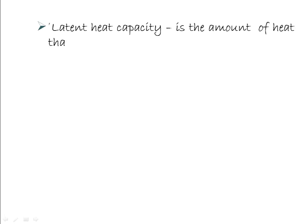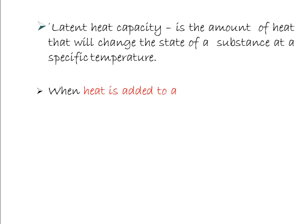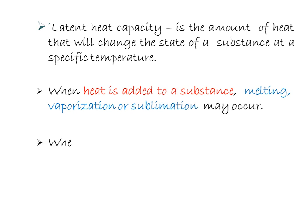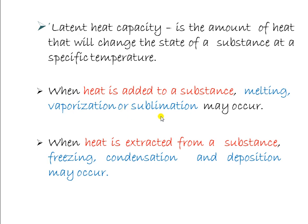Latent heat capacity is the amount of heat that will change the state of a substance at a specific temperature. When heat is added to a substance, melting, vaporization, or sublimation occurs. When heat is extracted from the system, freezing, condensation, and deposition may occur. Melting: solid converts to liquid. Vaporization: liquid converts to vapor. Sublimation: solid converts to vapor. For the reverse processes — freezing, condensation, and deposition — heat is extracted from the substance.